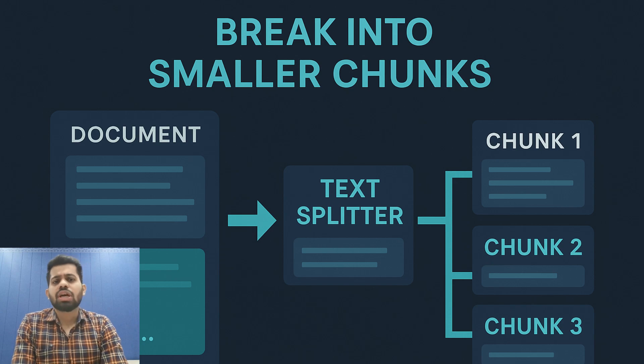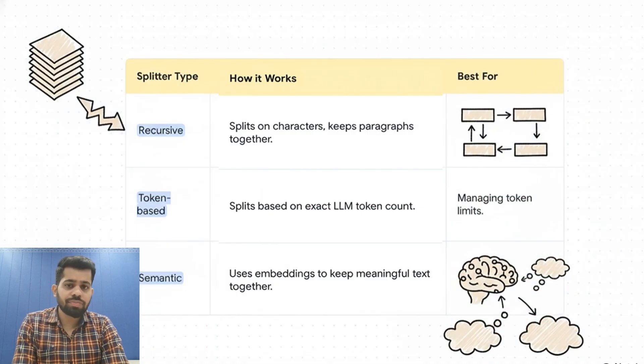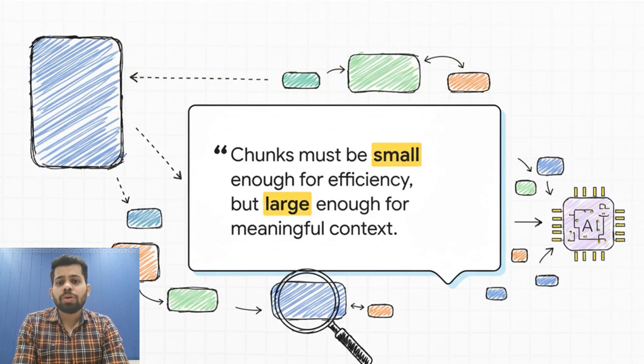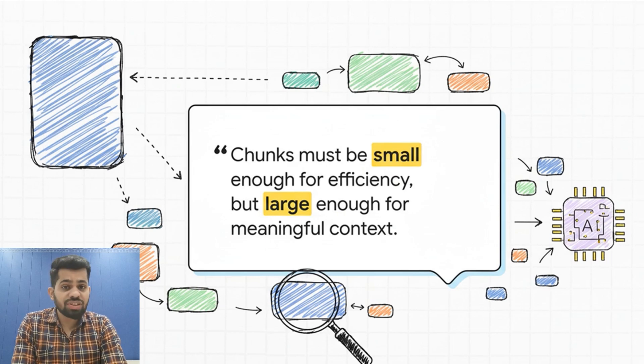LangChain offers several strategies like recursive character splitter, token-based splitter, semantic splitter. But what's the final goal? Each chunk should be small enough to process efficiently by the large language models but contain meaningful context. And at the end of input processing, you have a collection of document objects, each one is a chunk with its content and metadata, ready for the next stage.